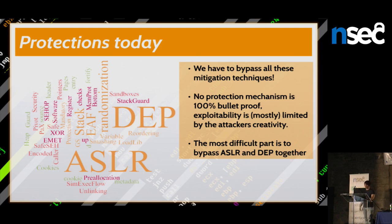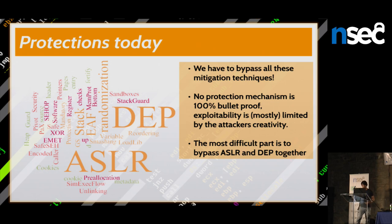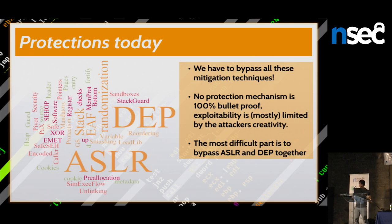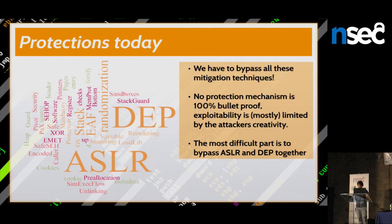The idea of data execution prevention is that data should be marked as read/write only, but not executable. So if you store something on the stack or heap, you cannot execute it. The idea of ASLR is that everything starts at a randomized address, so even if you can store your own code on the stack or heap, you don't know where it is. That's why it's so hard to bypass both protections together.